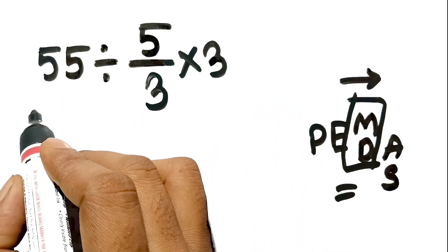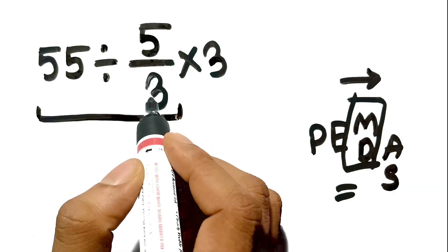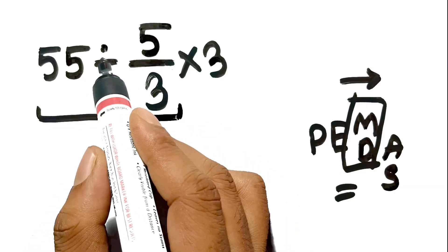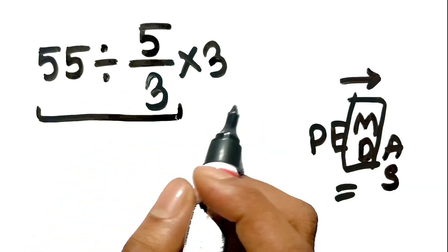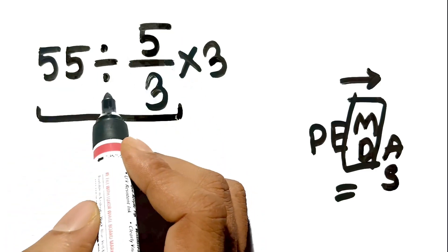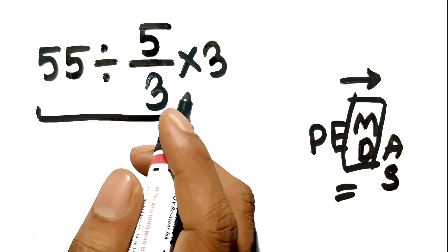We must start at the left. The first operation is 55 divided by the fraction 5 thirds. We cannot touch the times 3 at the end yet. To divide a whole number by a fraction, we use the reciprocal rule.